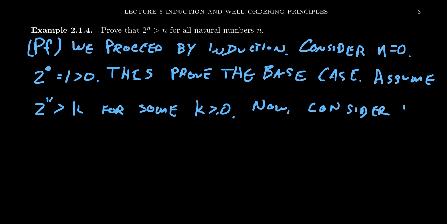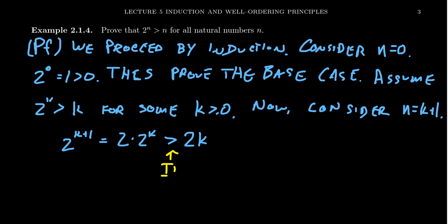Now consider the case where n = k+1. We have 2^(k+1) and need to relate it to the inductive hypothesis, so we factor: 2^(k+1) = 2·2^k. By our inductive hypothesis, 2^k > k, so this gives us 2·2^k > 2k. The inductive hypothesis was used on this inequality. It's good to be explicit about where the hypothesis is applied.